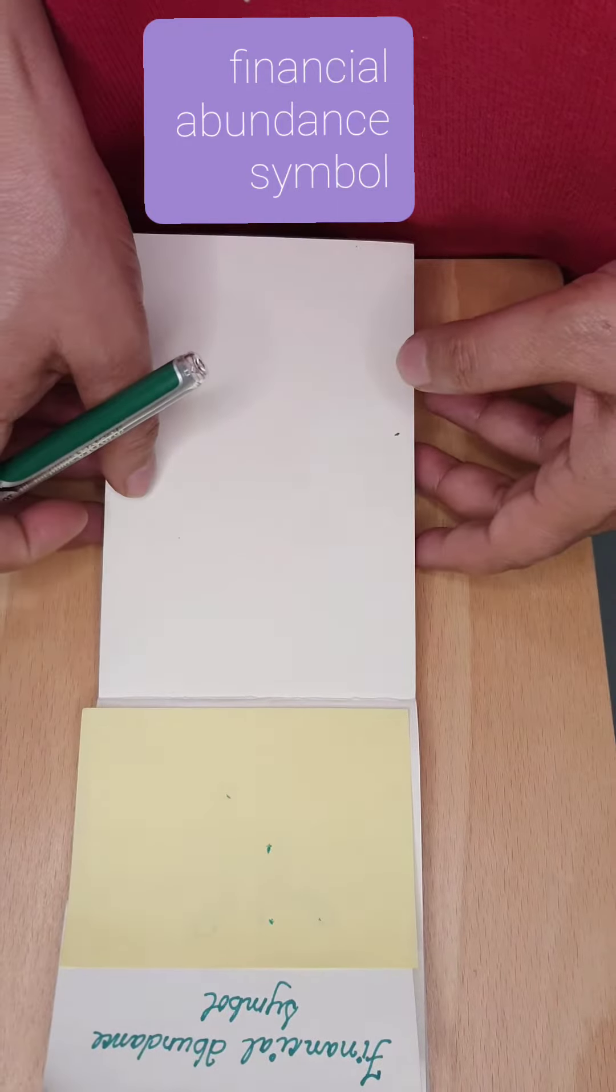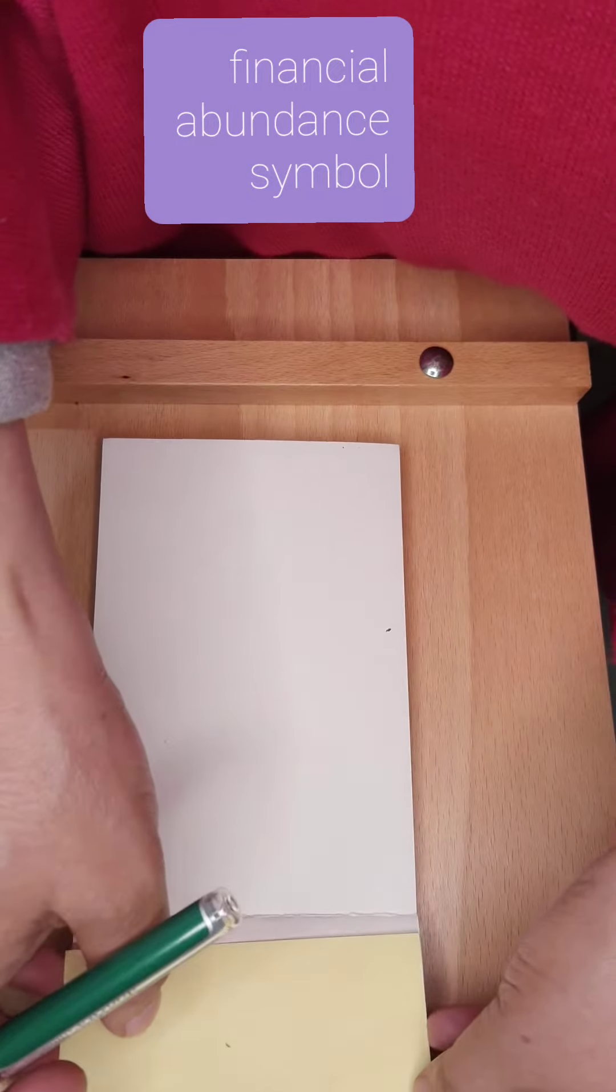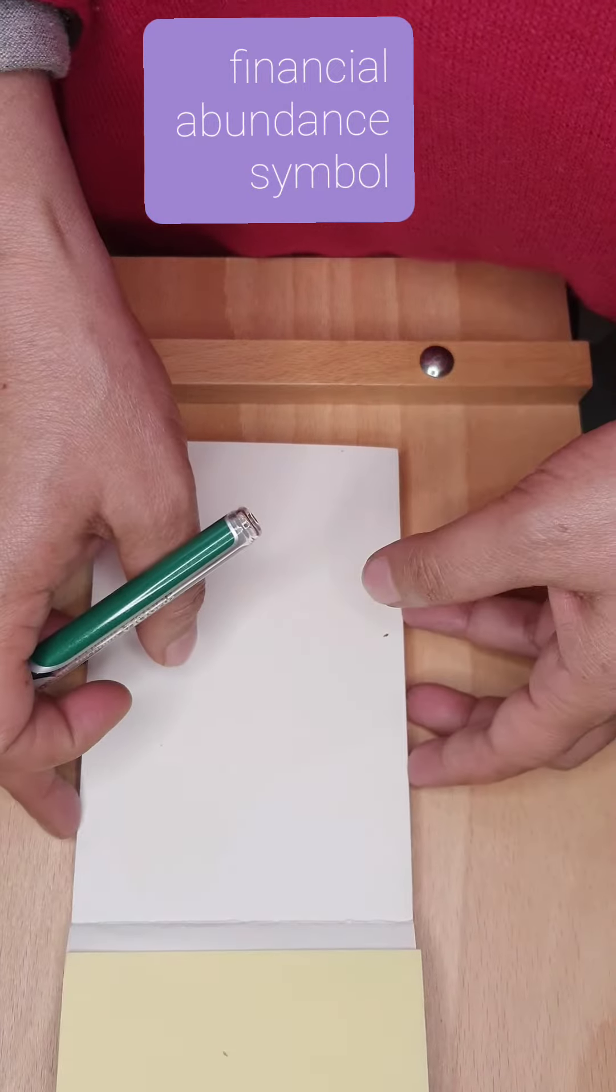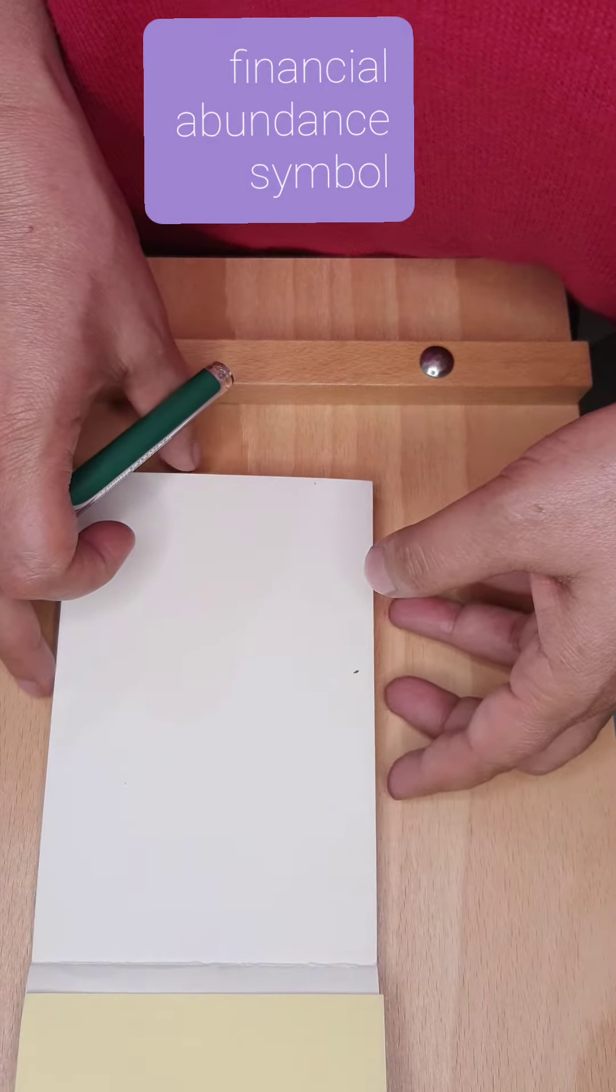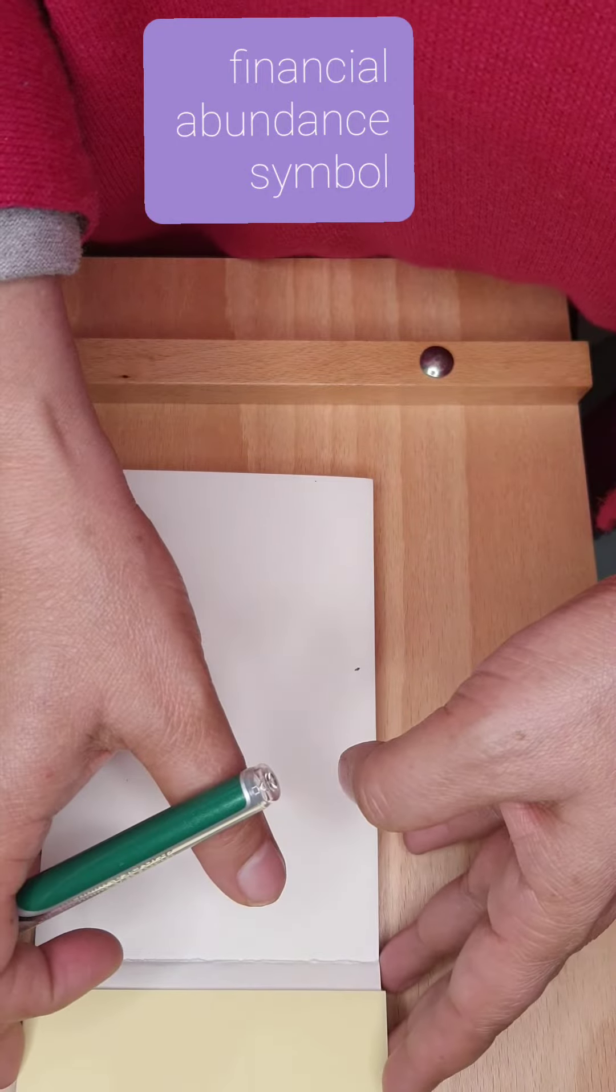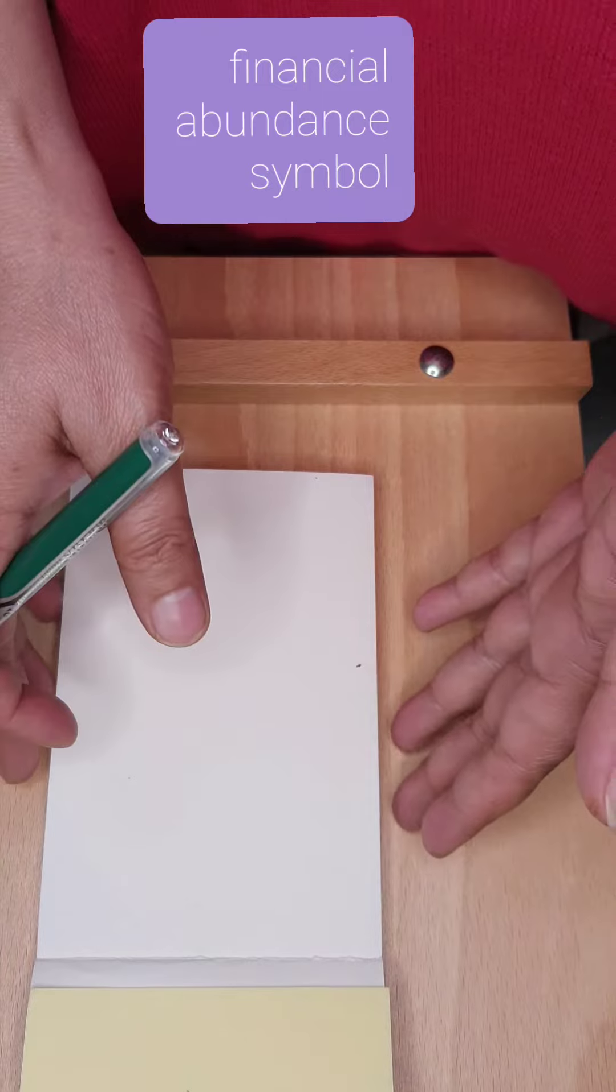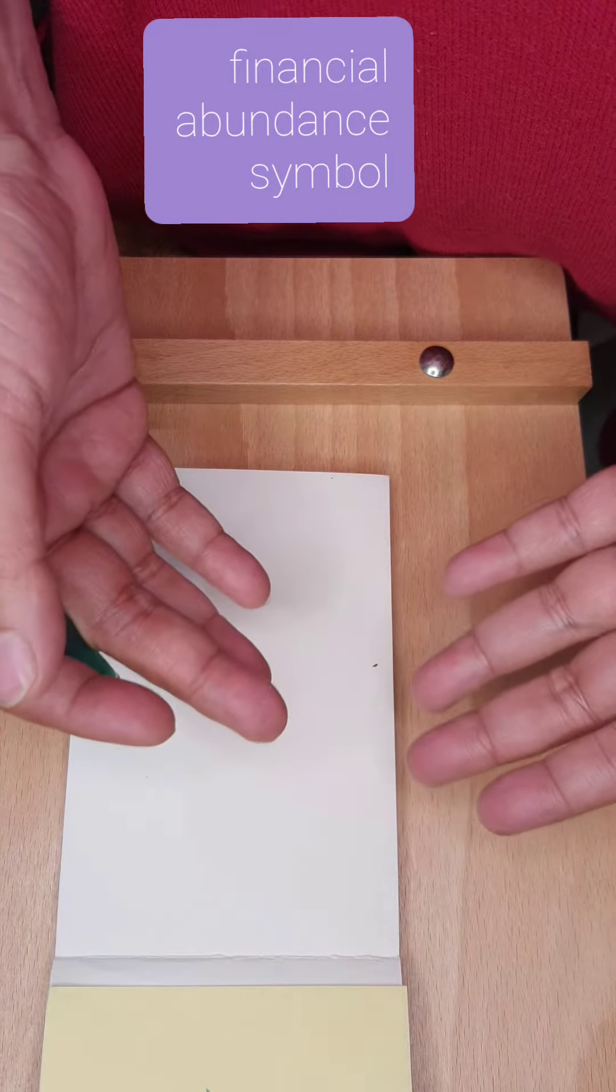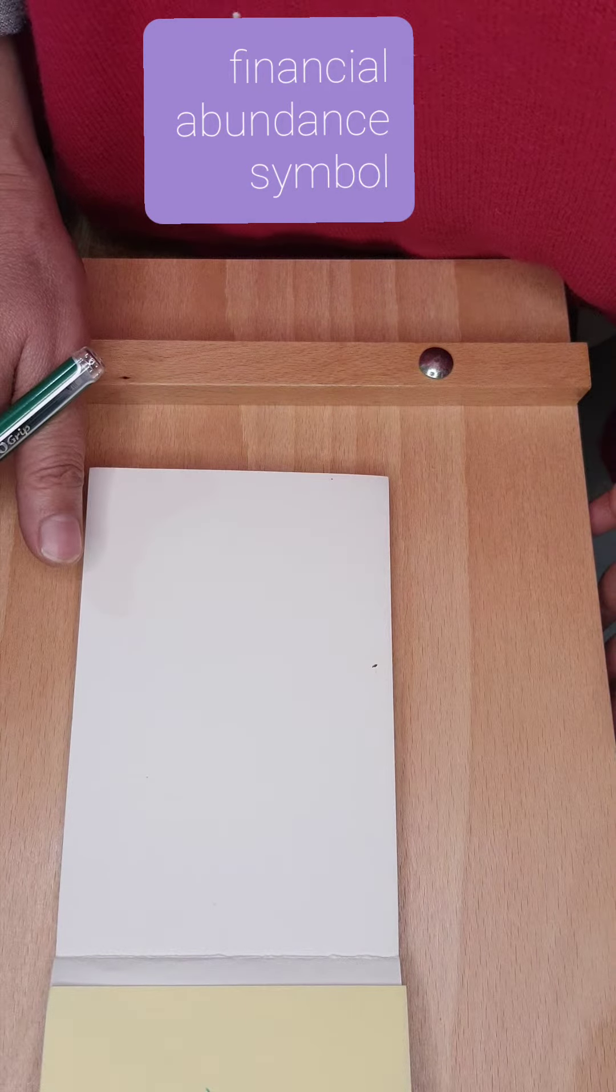When I draw it, it will remind you of Chokure, and you might wonder why I'm not taking the attunement for this. But for these symbols you do not need an attunement. You only need an intention, a pure heart, and love and affection.